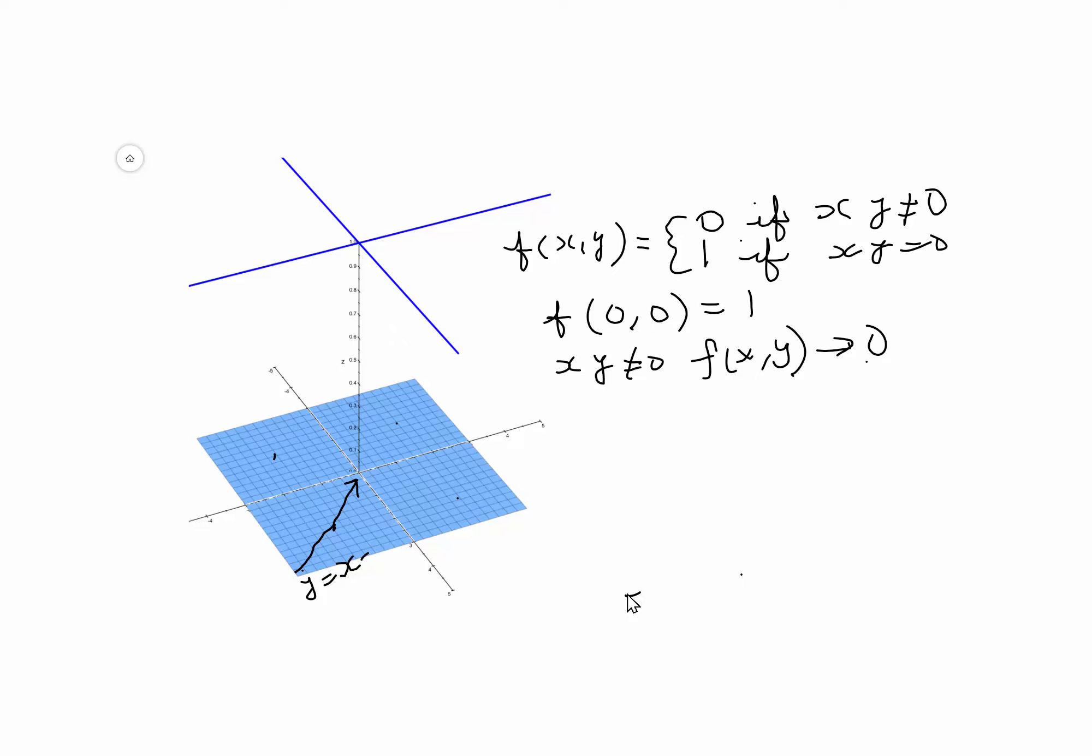The limit of the function at 0, even if it exists—we are not proving the existence or non-existence—cannot equal 1. So the limit does not equal 1, which means the function is not continuous at (0, 0).